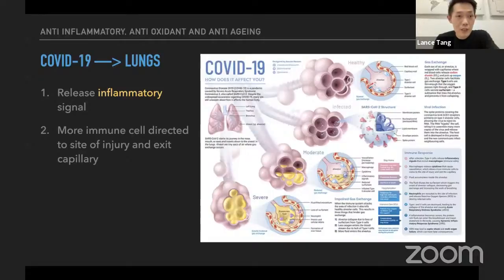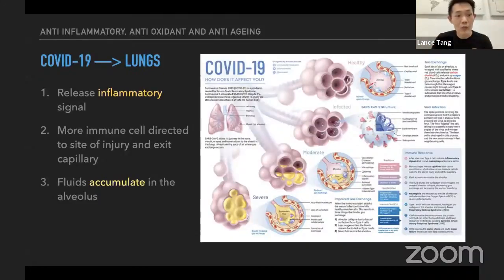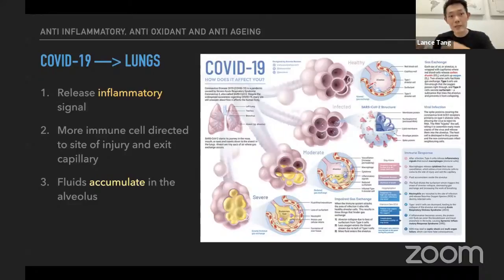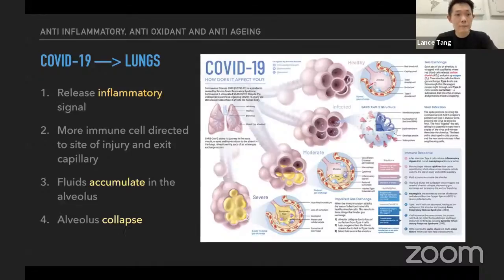In the lungs, immune cells are directed to the injury area and exit the capillaries — the smaller blood vessels surrounding our alveoli. All this fluid will actually go into our alveoli. The role of alveoli, as we learned in biology, is for the oxygen and carbon dioxide exchange to happen in those small bubbles. If fluids keep going in, it floods the alveoli and they can no longer perform the gas exchange. The alveoli system will eventually collapse.